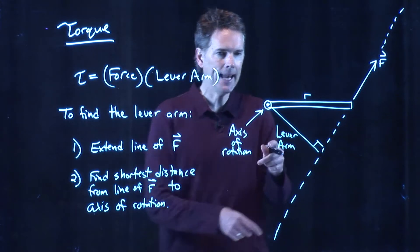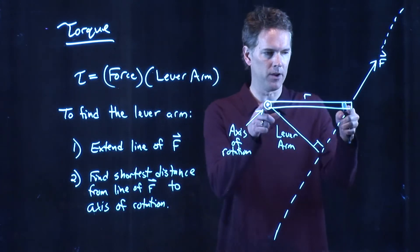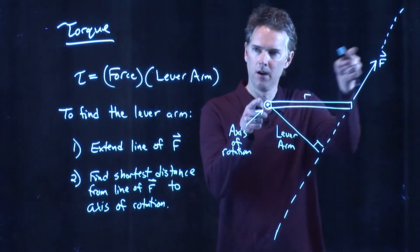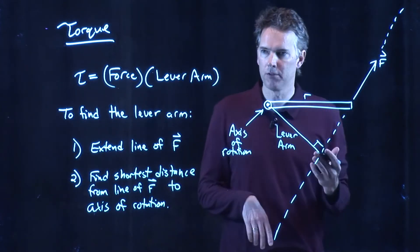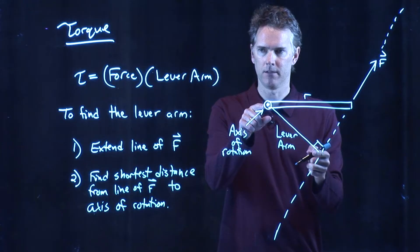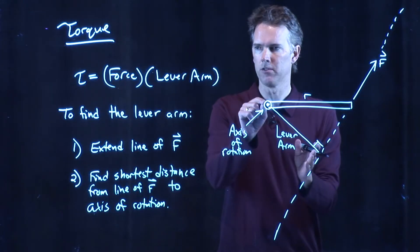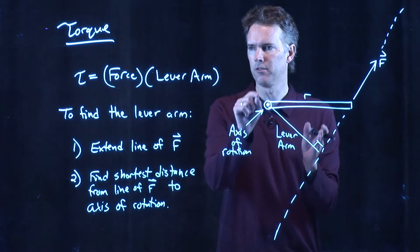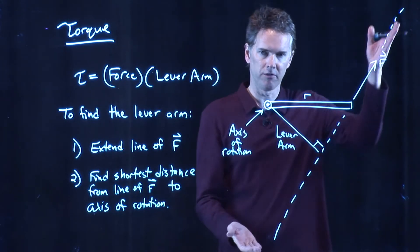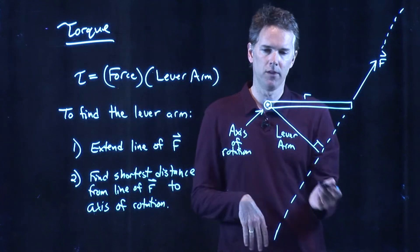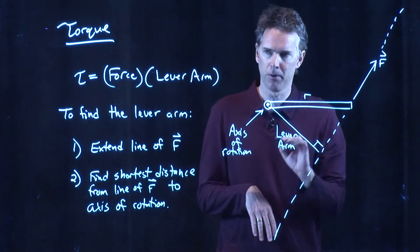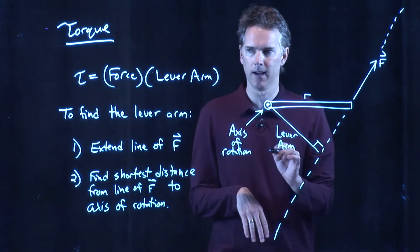Any other line I draw — if I draw something up here — all of those are going to be longer than that line. Shortest distance between two points is a straight line. The shortest distance from a line to the axis of rotation has to be perpendicular to that line.